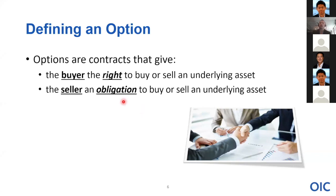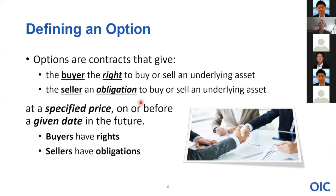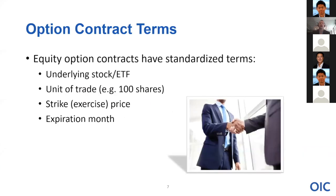Options contracts give buyers the right. Buyers pay money up front — it's an immediate debit — and they have the right to execute a transaction in shares of stock. Sellers of options are paid up front and take on the obligation to execute the opposite transaction in shares of stock. The key takeaway is buyer versus seller, rights versus obligations. The price at which this transaction can take place and the expiration date — how long the buyer has the right and the seller has the obligation — are defined in the options contract within standardized terms.